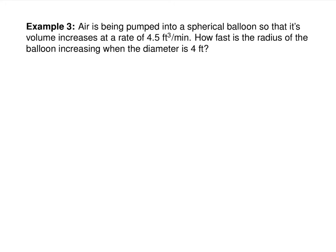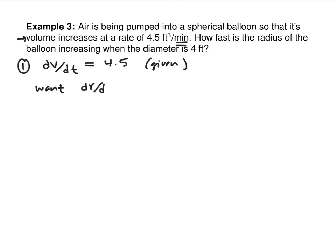Air is being pumped into a spherical balloon so that its volume increases at a rate of 4.5 cubic feet per minute. How fast is the radius increasing when the diameter is 4? Step one: volume increases at a rate of 4.5 cubic feet per minute — that's dv/dt, because the units in the bottom are time. So dv/dt is 4.5. What do we want to find? We want dr/dt at the point when r equals... they got a little tricky — diameter 4 means radius is 2.